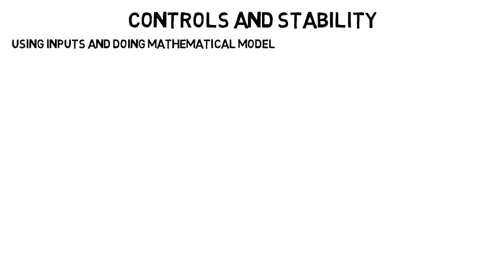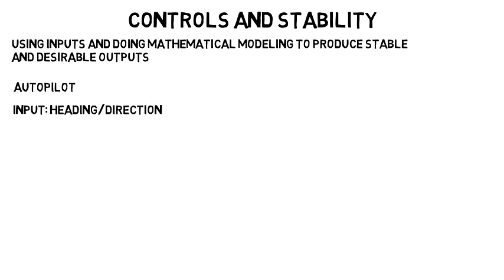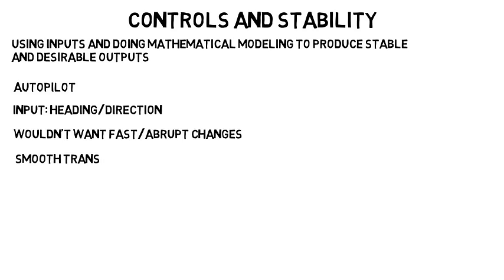Now let's go over controls and stability. This is essentially about using inputs, then doing mathematical modeling to produce a stable and desirable output. For example, aircrafts have autopilot on them. The pilot may input a certain heading or direction, and the aircraft control system has to be able to keep the plane headed in that direction. If you enable autopilot, you wouldn't want a really fast and abrupt change because that may cause discomfort. You want a smooth transition to put the aircraft on the right course. All this is about making sure the control system produces stable outputs from the inputs it receives.